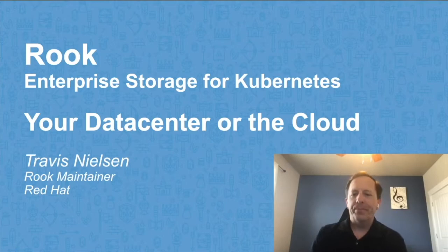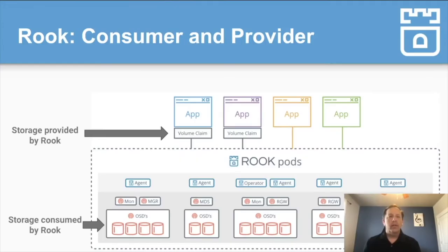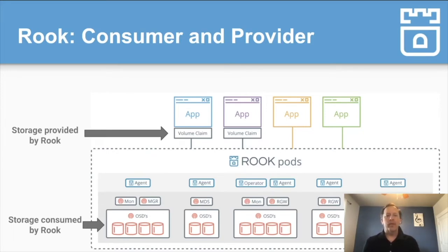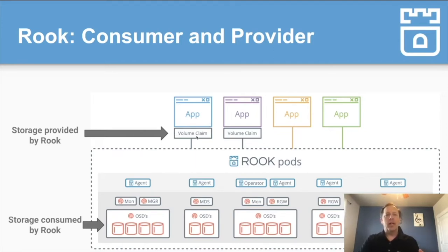It's the same Rook cluster. Rook is both a consumer and a provider of storage. Your applications need to consume the storage — that's why you want Rook in the first place, so your applications have access to that storage. At the top of the diagram, we see that your applications have requested the storage. You've got PVCs, these volume claims underneath your applications, and how that storage comes up from Rook and Ceph is all underneath it, and the applications don't care — they're just happy to have storage available.